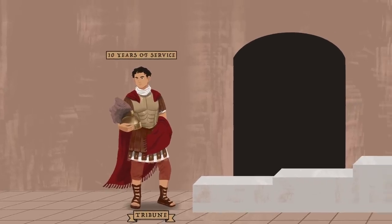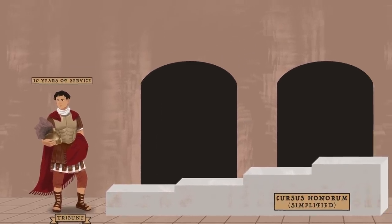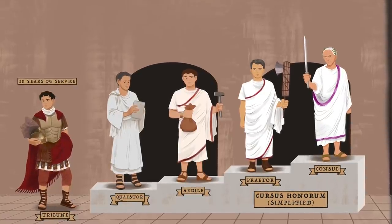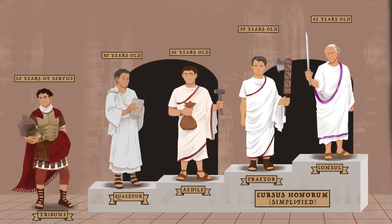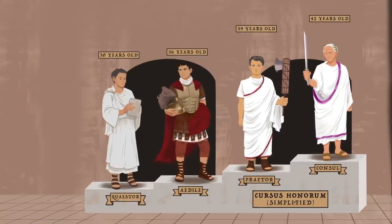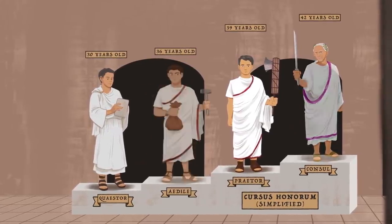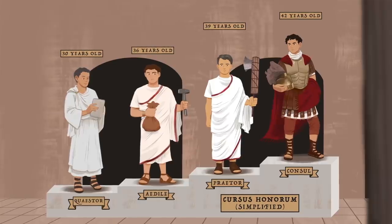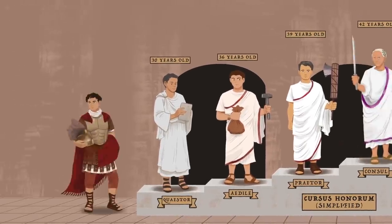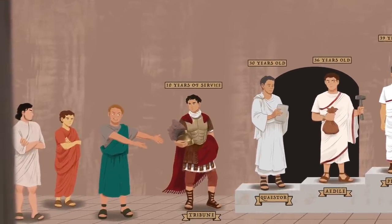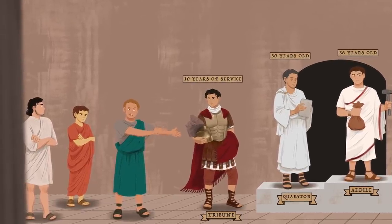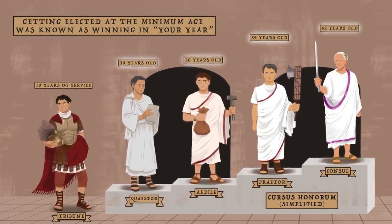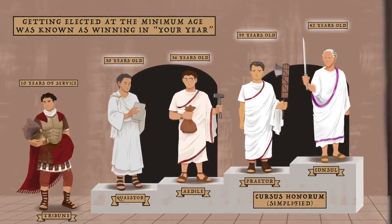Completing a decade of military service was the entry ticket into the Cursus Honorum, ancient Rome's political career path, laid out by a mix of norms and laws. It specified how one could advance between offices, with limits on minimum age and time between holding offices. Exceptions did occur for those popular or powerful enough to treat the rules as guidelines — especially in the late Republic. The ambitious men of Rome fought tooth and nail for their turn in the small number of available offices each year. Being elected at the exact age you were qualified was known as being elected 'in your year' and was considered a significant badge of honor.